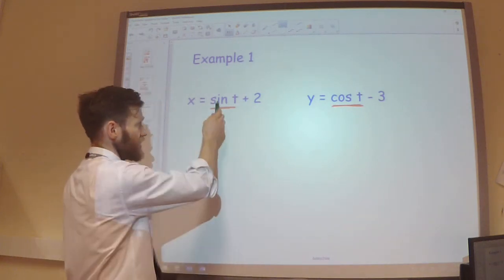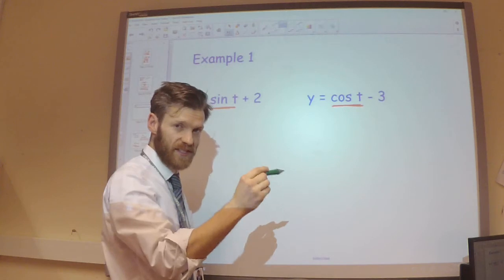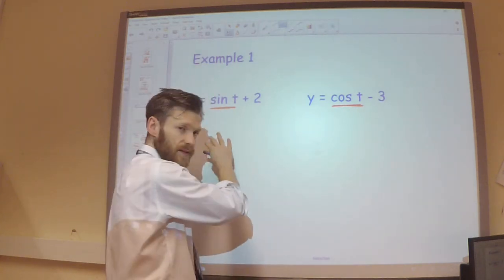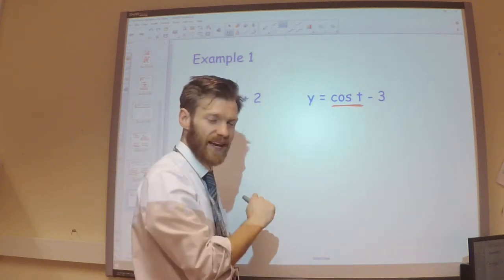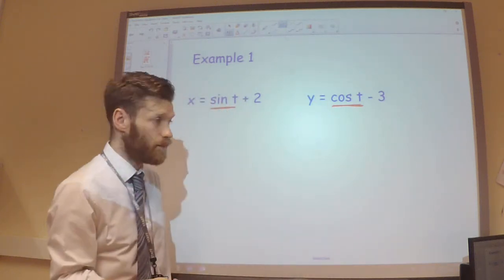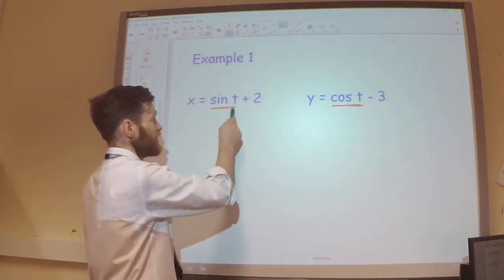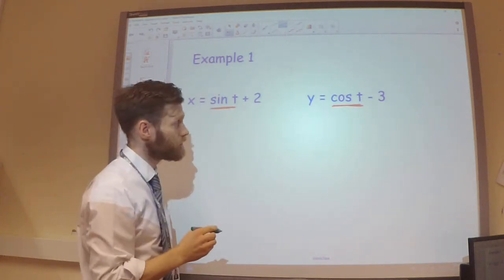So if I can make the sine and the cos the subjects here, then square the sine, square the cos, add them together, I will get 1. And that will help me to eliminate the t's.